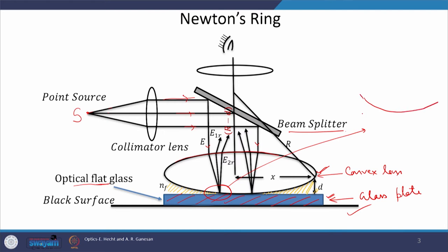What happens is that the rays fall here and then get reflected partially and transmitted partially, and the transmitted rays again get reflected partially upward. These reflected rays interfere. They are parallel rays and then we put a lens and they go into our eyes where we see the interference pattern. Due to this air film, there is a path difference between the two reflected rays, and this is similar to the concept of wedge shaped film.